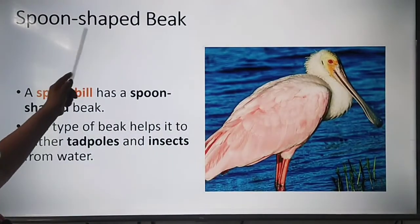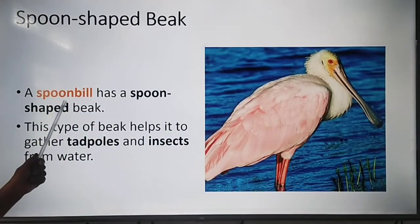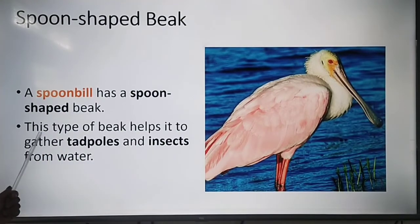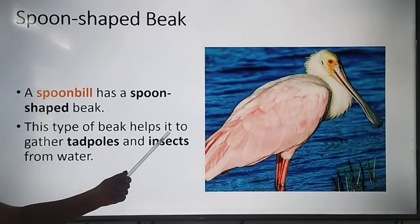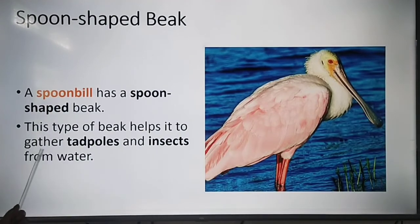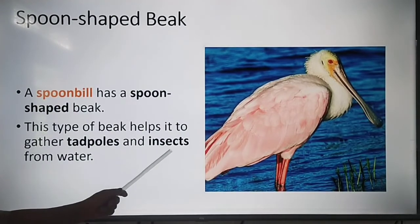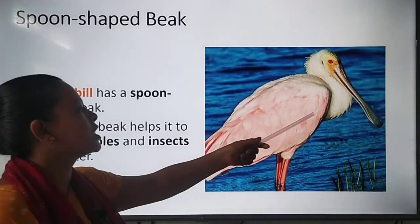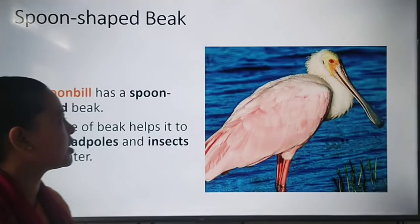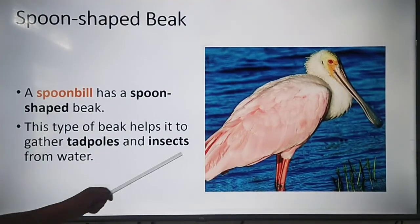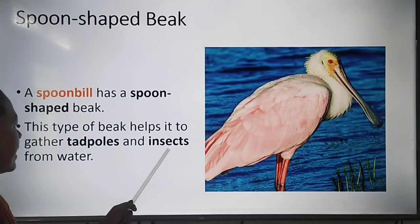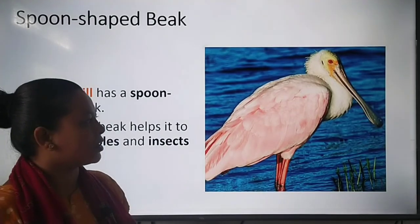Next is the spoon-shaped beak. The spoonbill has a spoon-shaped beak. This type of beak helps it to gather tadpoles and insects from water.